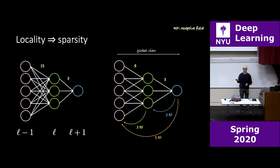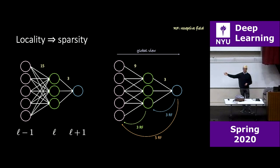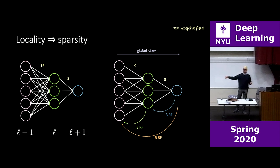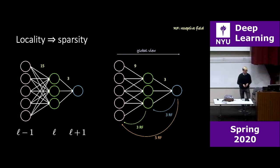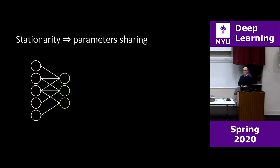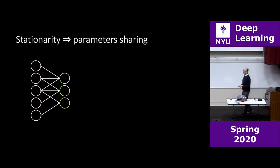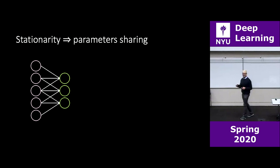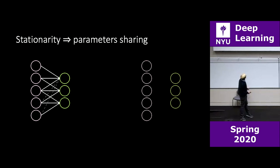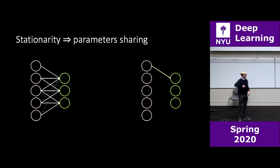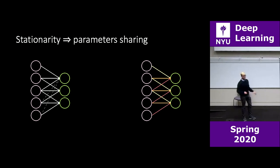We can talk about sparsity only because we assume our data shows locality. If my data doesn't show locality, I can't use sparsity. We also said that natural signals are stationary — things appear over and over again — so maybe we don't have to learn the same stuff all over again. We drop those extra lines and reuse connections: the first kernel weight is yellow, the next orange, the final red.